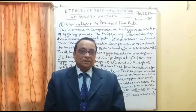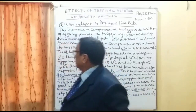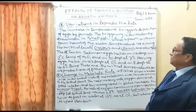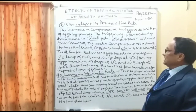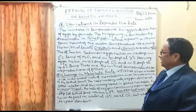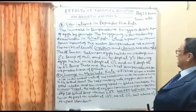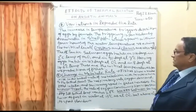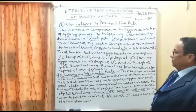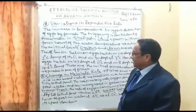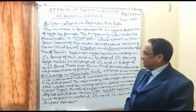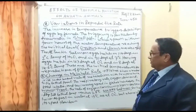Effect number four is variations in reproductive rate. An increase in temperature triggers egg deposition by females, and this is particularly dramatic in shellfish, which spawn within four hours of water temperature reaching a critical level. Oysters and clams are also affected. Atlantic salmon eggs hatch in 114 days at 2 degrees centigrade, in 90 days at 7 degrees centigrade, and in just 8 days at 14.6 degrees centigrade.